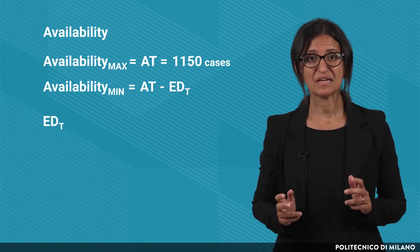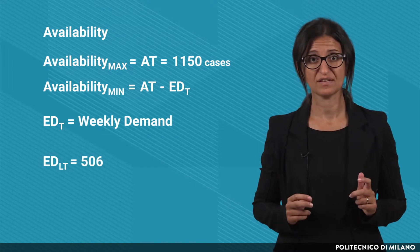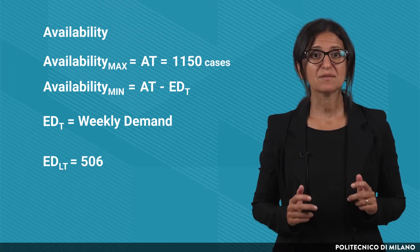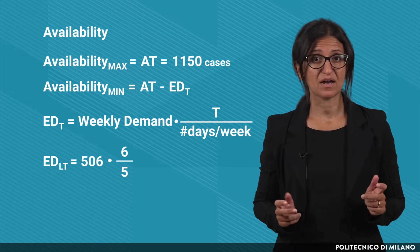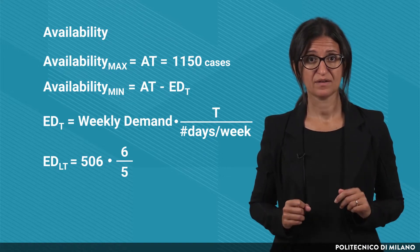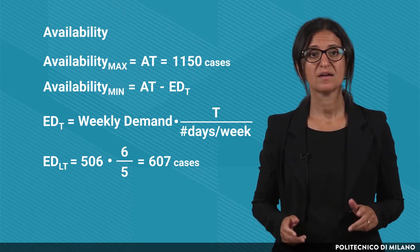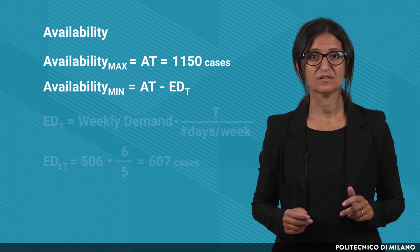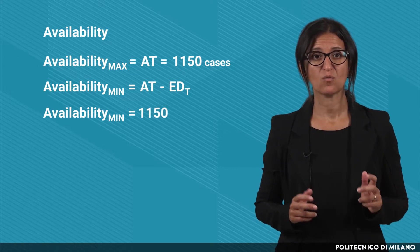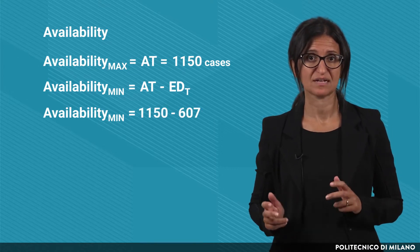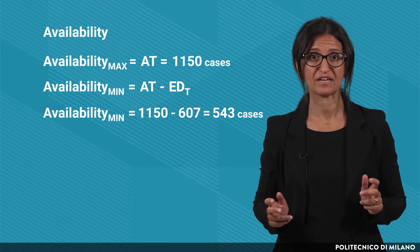The expected demand during t is found as the weekly demand, 506 cases, multiplied by t, 6 days, divided by 5 working days per week, resulting in 607 cases. Therefore, the minimum level of availability is equal to 1150 minus 607, and so 543 cases.